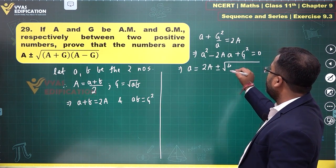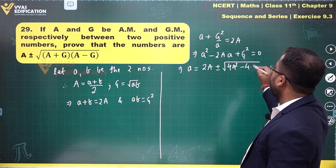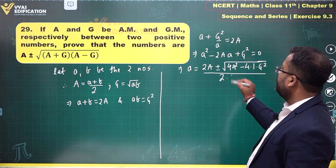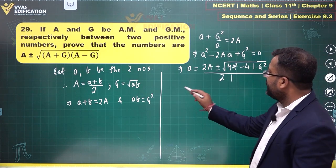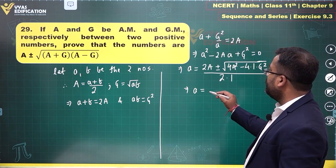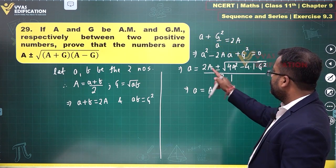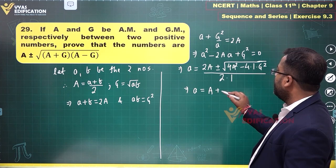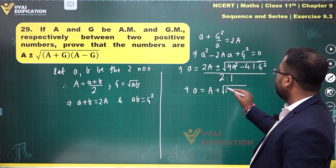This gives a = (2A ± √(4A² - 4G²))/2 = A ± √(A² - G²) = A ± √((A+G)(A-G)). So a will be either A + √((A+G)(A-G)) or A - √((A+G)(A-G)).